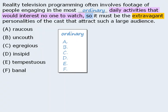How about 'ordinary'? Now that we have a prediction, we'll check the answer choices. First, we have 'raucous,' which means loud and disorderly. Now, if you watch a lot of reality television and know what it's all about, you may want to choose this answer. But remember that in sentence equivalence questions, the correct answer must be supported by the context, and this answer is not supported. In fact, raucous has the opposite meaning of what we need here, so we'll eliminate it.